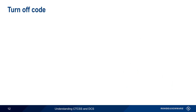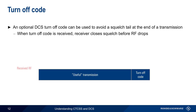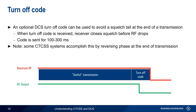One additional feature of DCS is the turnoff code. This optional code is used to avoid hearing a squelch tail or a crash at the end of a transmission. When the user is finished speaking, the turnoff code is enabled, and this instructs the receiver to close squelch — that is, mute the audio output — before the received RF drops. The duration of this turnoff code is configurable, normally in the range of 100 to 300 milliseconds. Note that a similar function can be performed in some CTCSS systems by reversing the phase of the analog tone at the end of the transmission. This is, however, not a standard feature in CTCSS, and is usually referred to by vendor-specific names such as reverse burst or STE, for squelch tail elimination.